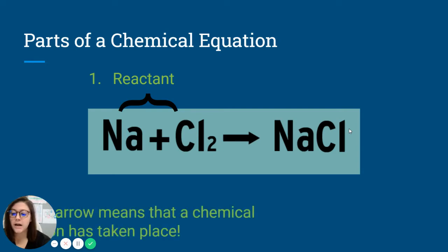The next piece is our arrow. Oh, my thing is a little bit covering it. But the arrow means that a chemical reaction has taken place. So that's what that arrow means. You have to have that arrow to tell you that some type of chemical reaction has taken place.